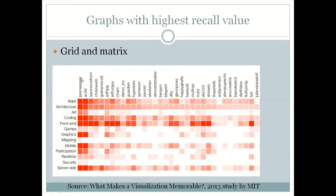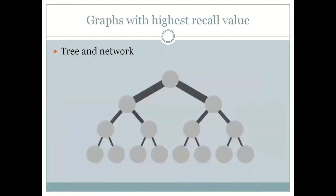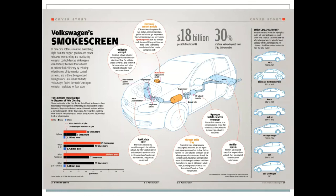In a specific example using the grid-matrix format, they also used the pre-attentive attribute of color to make certain things stand out and others fade. The second most memorable type of visualization was trees and networks — this works well if you're trying to explain a concept or an organization as a hierarchy. If your content can sit in that format, it makes a lot of sense to use it.